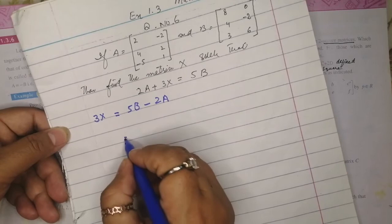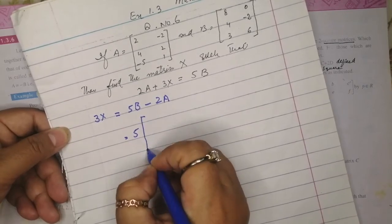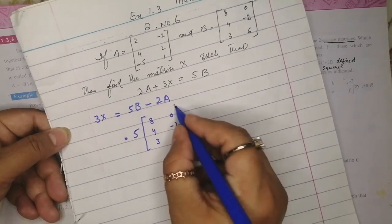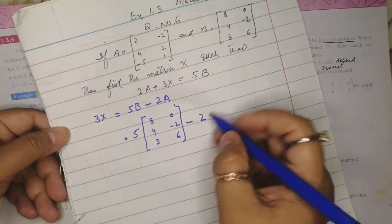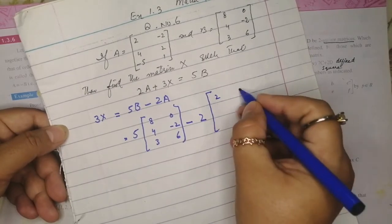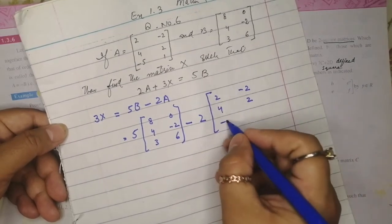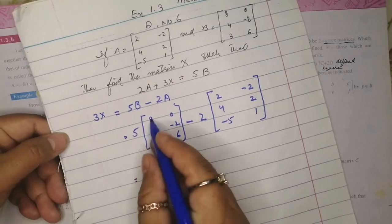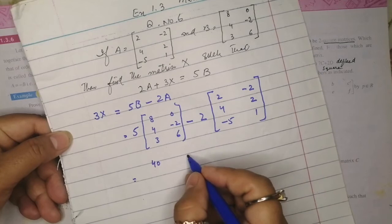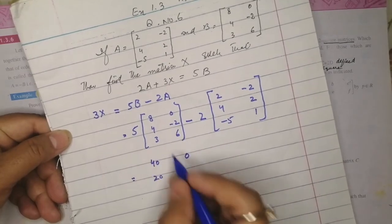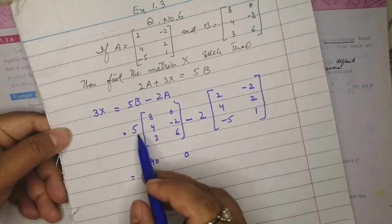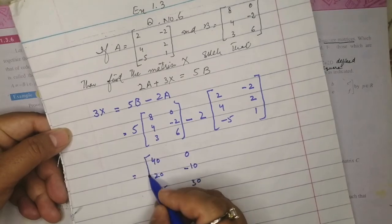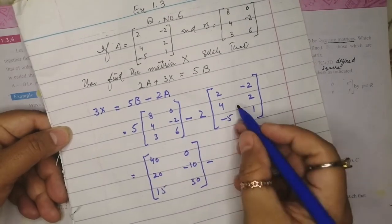First we solve to get the value of 3X, then we will extract matrix X. We substitute matrix B: [8, 0, 4, -2, 3, 6]. Then multiply by 5: 5×8=40, 5×0=0, 5×4=20, 5×3=15, 5×(-2)=-10, 5×6=30.